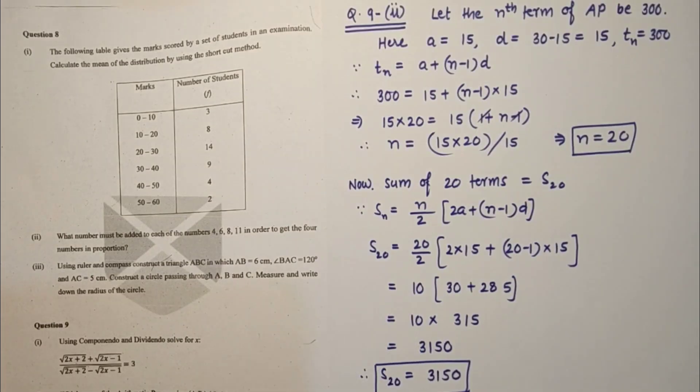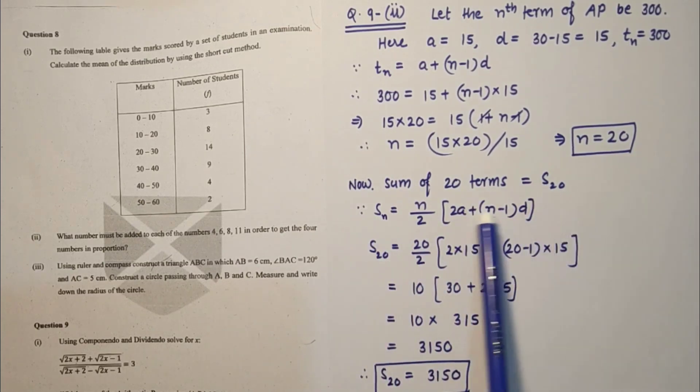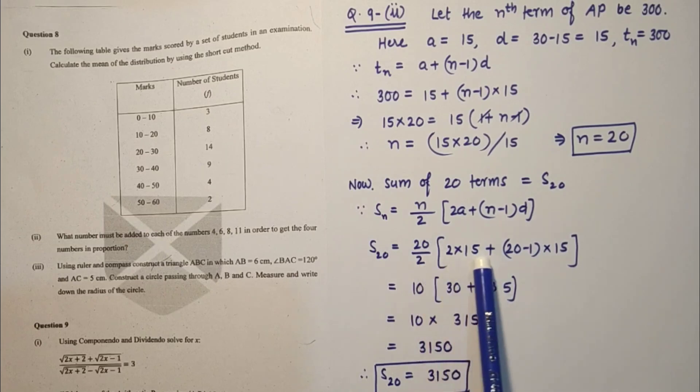Question number 9 second sub part. Which term of the arithmetic progression is 300, and hence find the sum of all the terms of the AP? Let the nth term of that AP be 300. Using formula, n is coming 20, so 20th term will be 300. Sum of 20 terms using formula, S20 equals n by 2 times 2A plus (n minus 1)D, that is 3150. This is the answer.